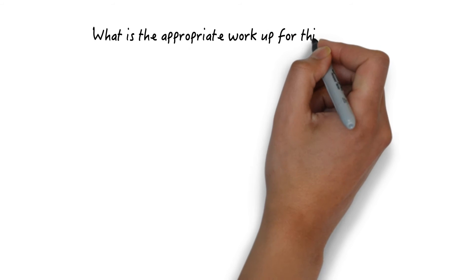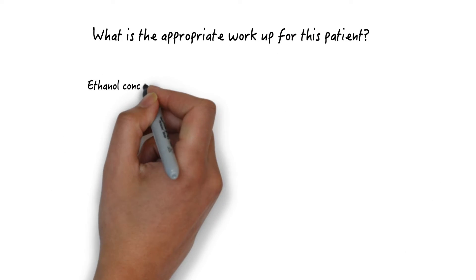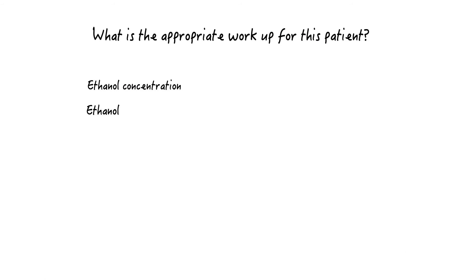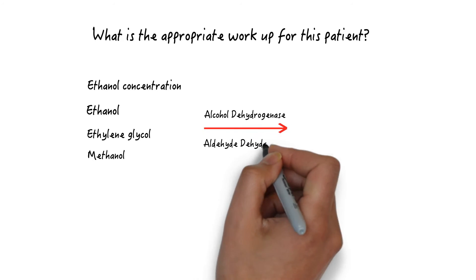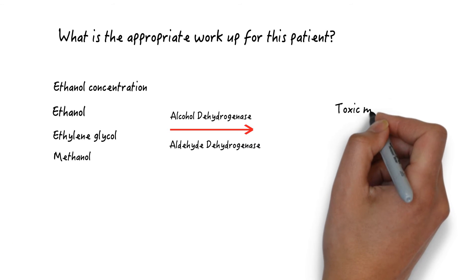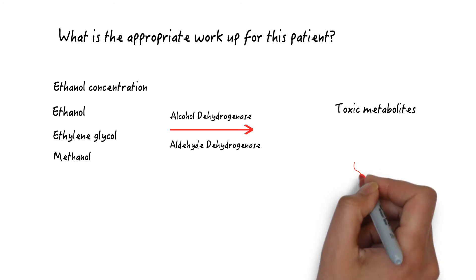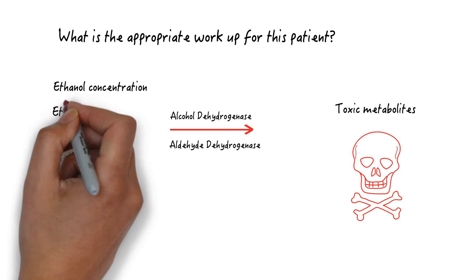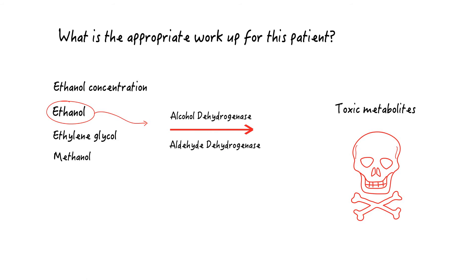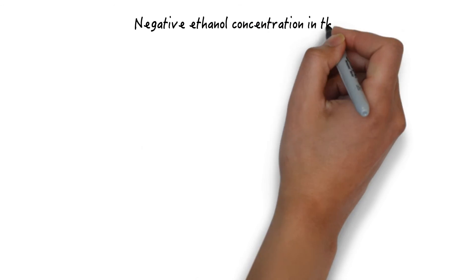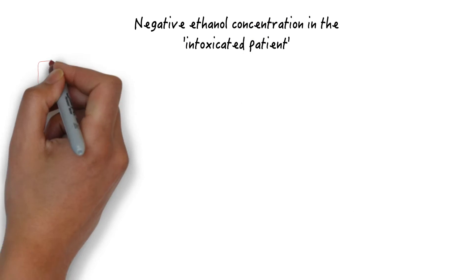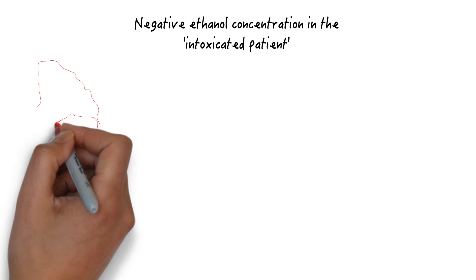What is the appropriate workup for this patient? Obtaining an ethanol concentration can be helpful. Since ethanol, ethylene glycol, and methanol all share the same enzymes in their initial metabolism, ethanol can actually be protective by competitively occupying these enzymes and preventing the formation of toxic metabolites, but only at a concentration over 100 mg per deciliter. A negative ethanol concentration in a patient with apparent intoxication should prompt you to think of other causes of altered mental status.